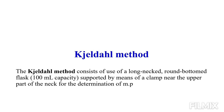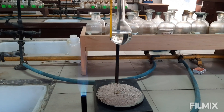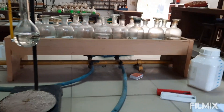The Thiele tube method consists of the use of a long neck round bottom flask supported by means of a clamp for the determination of melting point. In the Thiele flask, sulphuric acid is used as the bath liquid. Fresh sulphuric acid can be heated up to a temperature of 250 to 280 degrees Celsius; its boiling point is 338 degrees Celsius.